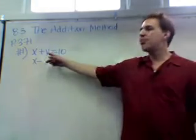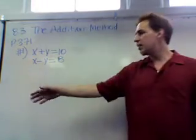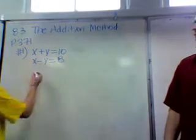Why? Because what happens to y and negative y when you add them together? They cancel out. Exactly. So go ahead. Just put a line under it, and you get 2x equals 18.